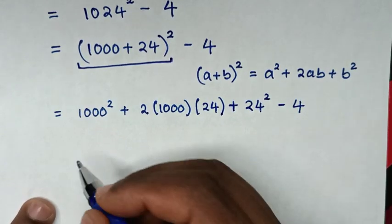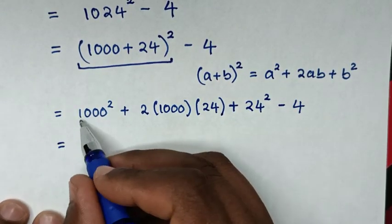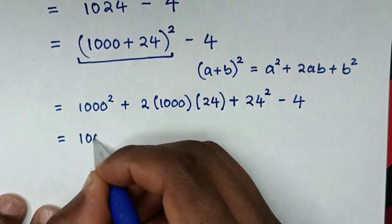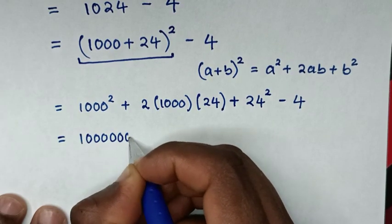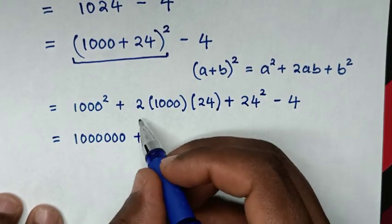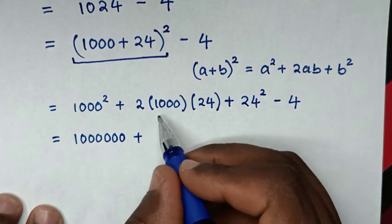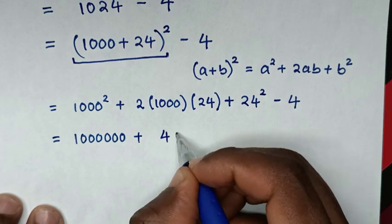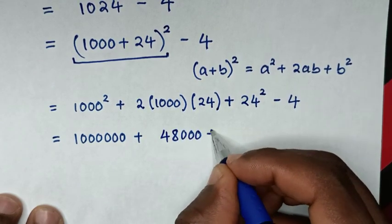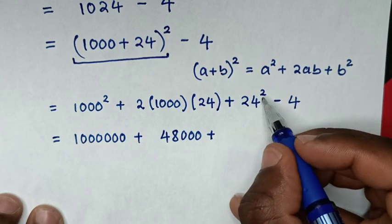Then in the next step, 1000^2 is 1,000,000, then plus 2 times 24 is 48, and 48 times 1000 is 48,000, then plus 24^2.